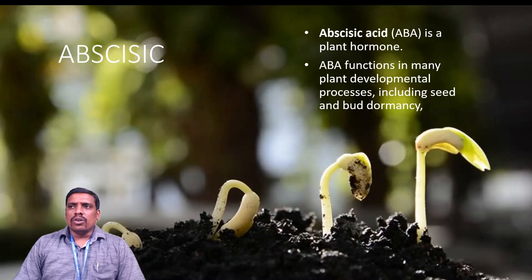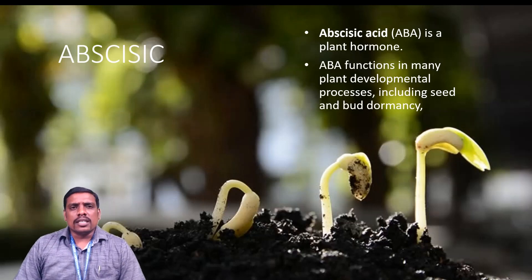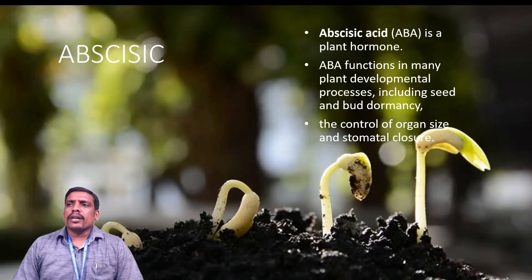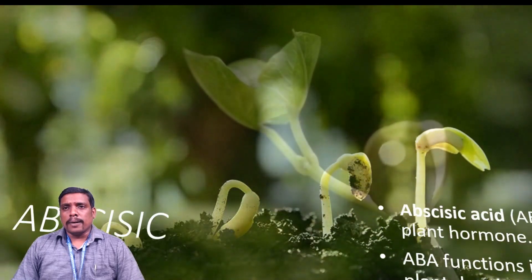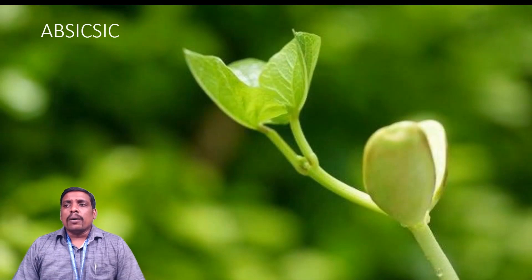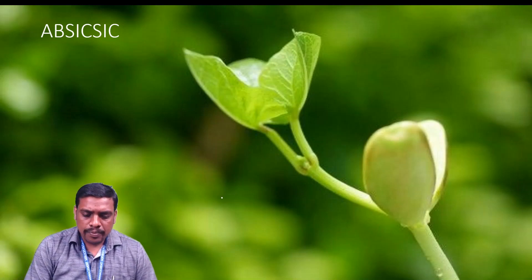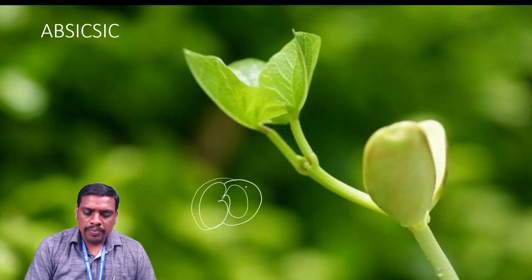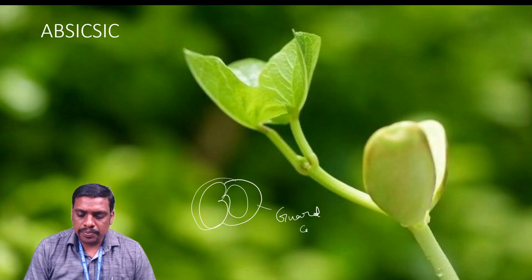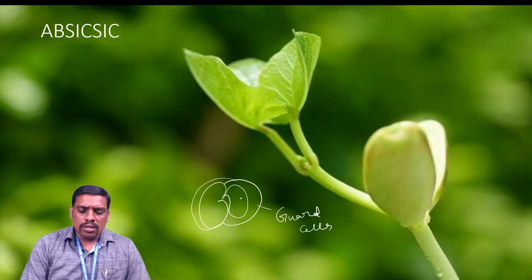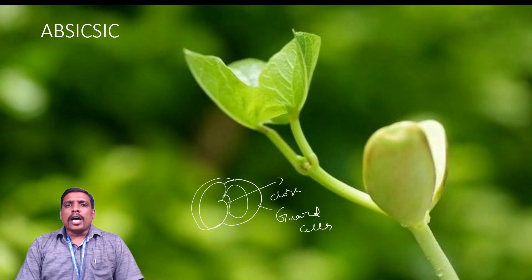Abscisic acid is a plant hormone which has many functions in many aspects, especially in plant growth and developmental processes including seed and bud dormancy. It plays an important role in the control of organ size and stomatal closure. During the closing of stomata in the plant leaf, abscisic acid plays an important role. Stomata is a bean-shaped or kidney-shaped cell protected by cells called guard cells, and abscisic acid plays an important role in closing this stomata.